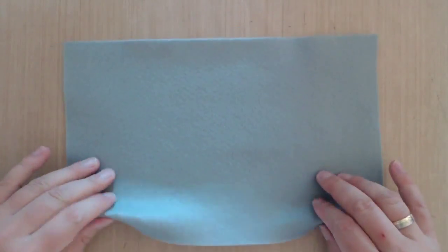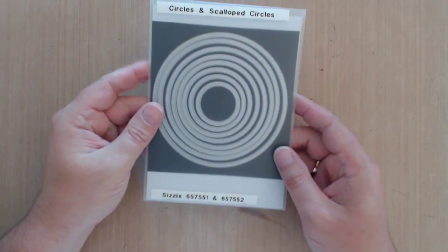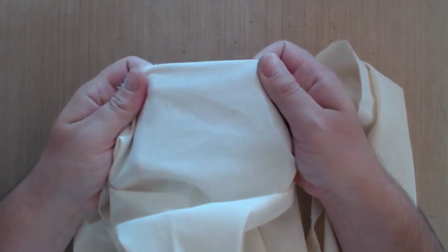You will need some kraft felt. The color doesn't matter as nobody will see that in the end. You want to cut a circle out of that felt with either a circle die or even cut it by hand.